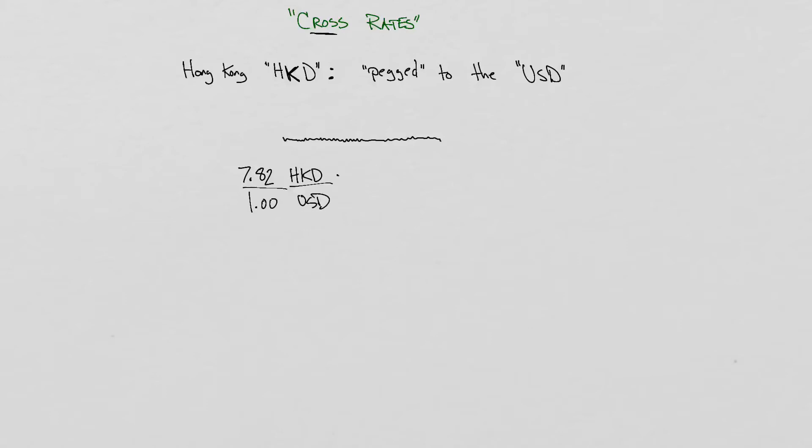So we know the exchange rate between the Hong Kong dollar and the US dollar right now. So let's suppose though that we're looking at the Chinese yuan. Separate currency, Chinese yuan. The ISO code for that is going to be RMB, renminbi.